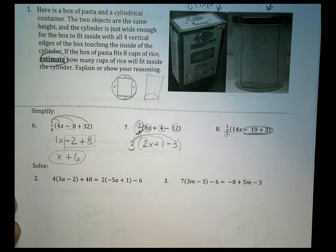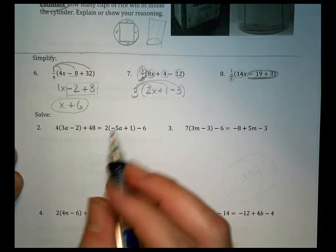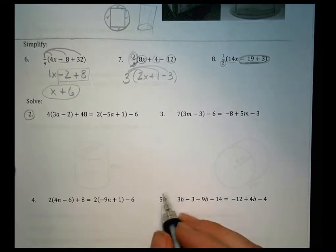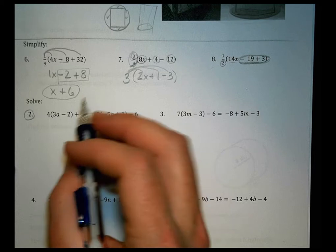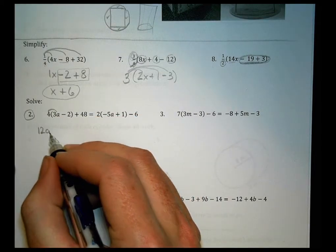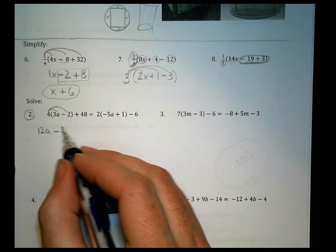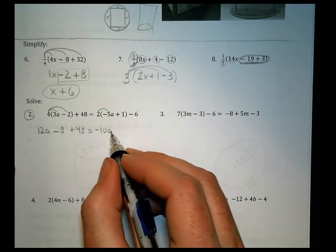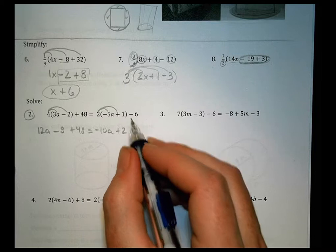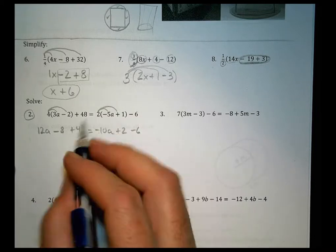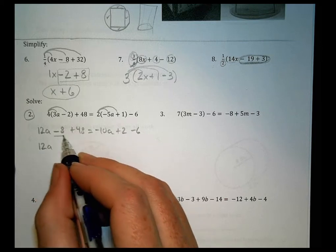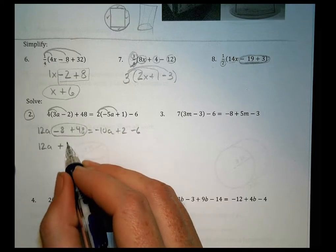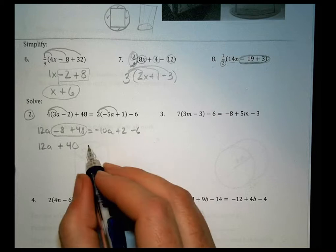Over here, number 2, I'm going to do number 2 and number 5 with you today. For the first one, I'm going to distribute. 4 times 3a is 12a, 4 times negative 2 is negative 8, and then we're going to add 48. That's going to equal 2 times negative 5 is negative 10a, 2 times 1 is plus 2, and we have a minus 6 there. I'm going to combine some like terms on each side. 12a is by itself, negative 8 and positive 48 combine to make positive 40. Over here, negative 10a is by itself, and I have a minus 6 and a plus 2, so that combines to make a minus 4.